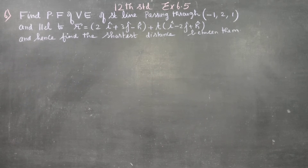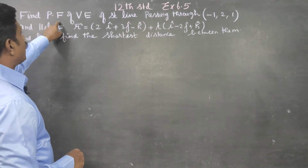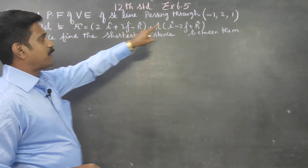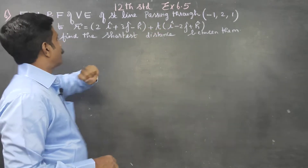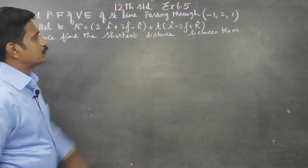Dear 12th standard students, in exercise number 6.5, sum number 6: find the parametric form of vector equation of the straight line passing through and parallel to.